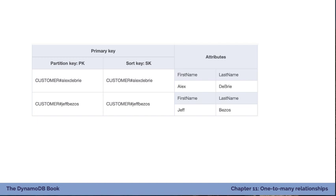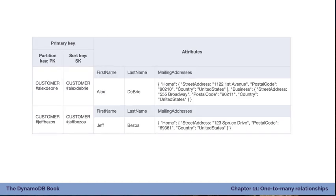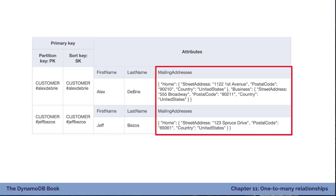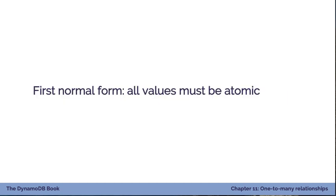The way we model this is by adding an attribute on the customer item itself. This attribute is of type map — like a dictionary — and we add a mailing addresses attribute. Alex Debris has a home and business address, and Jeff Bezos has a home address saved as well. We discussed normalization in Chapter 7 — the first rule of first normal form is that all values must be atomic. We're violating that here by putting a complex map attribute that isn't atomic, but it helps in this situation.